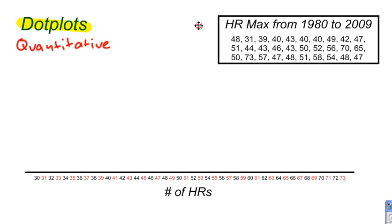So I'm just going to go straight through this here. 48 — I'm going to put a dot right there above 48. And then 31, 39, very basic. 40, 43, two more 40s — put those on top, just like this.